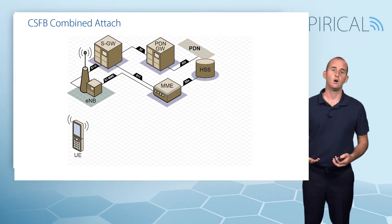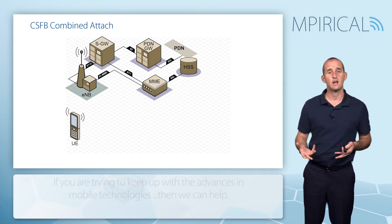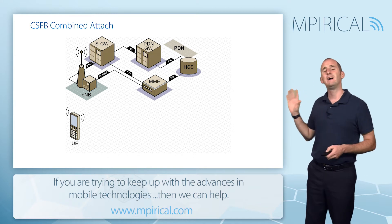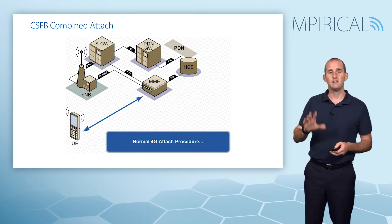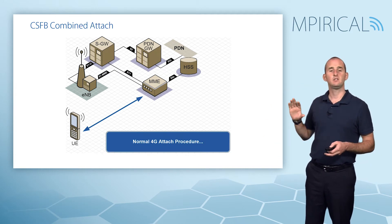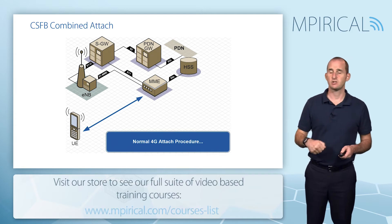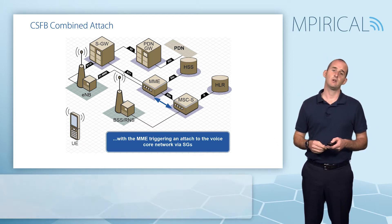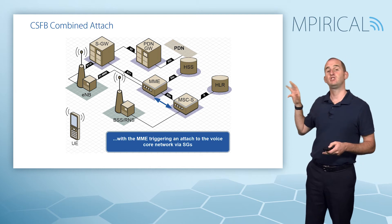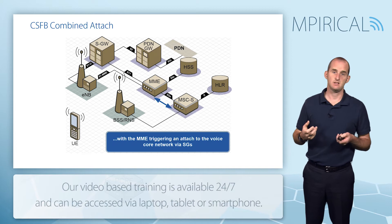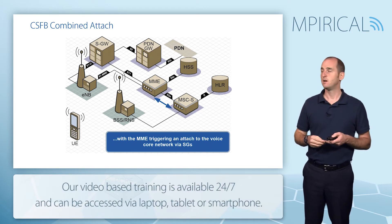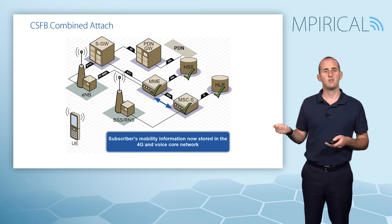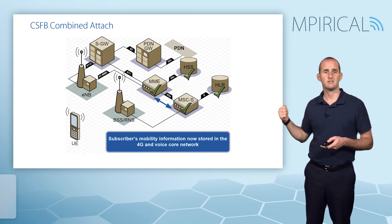For circuit switch fallback to actually work, a subscriber needs to be attached to the 4G network and the 2G/3G voice call network at the same time. To achieve that, you need to conduct a combined attach, which is an LTE level procedure. During that attach, the 2G/3G voice call network is notified that this user has attached. This is achieved using the SGS interface, which is the link between the MME and the MSC server of the voice call network. Once attached, subscriber information is held in the MME and the MSC server, and subscriber mobility information is held at the HSS and the HLR.